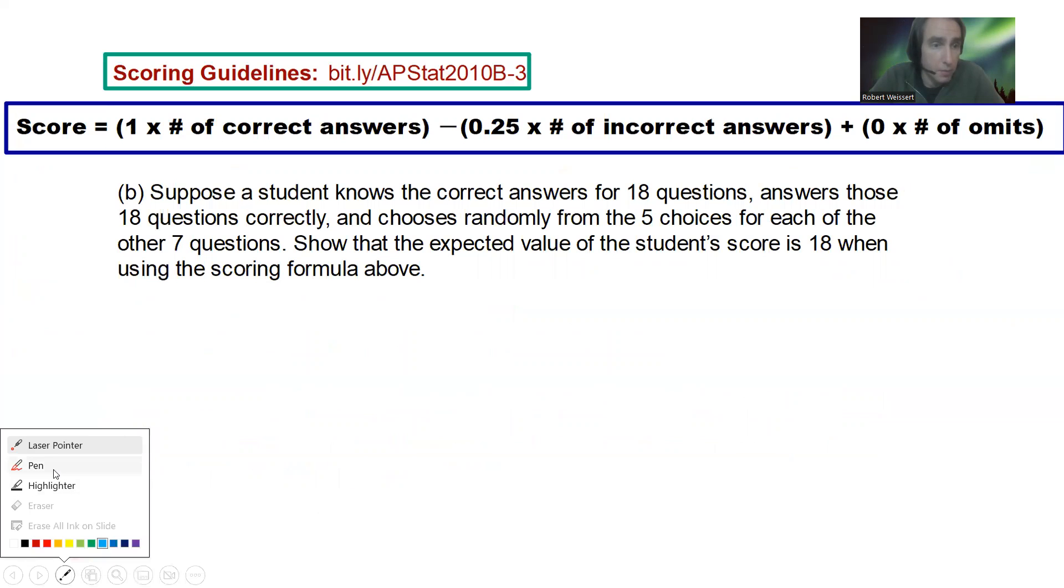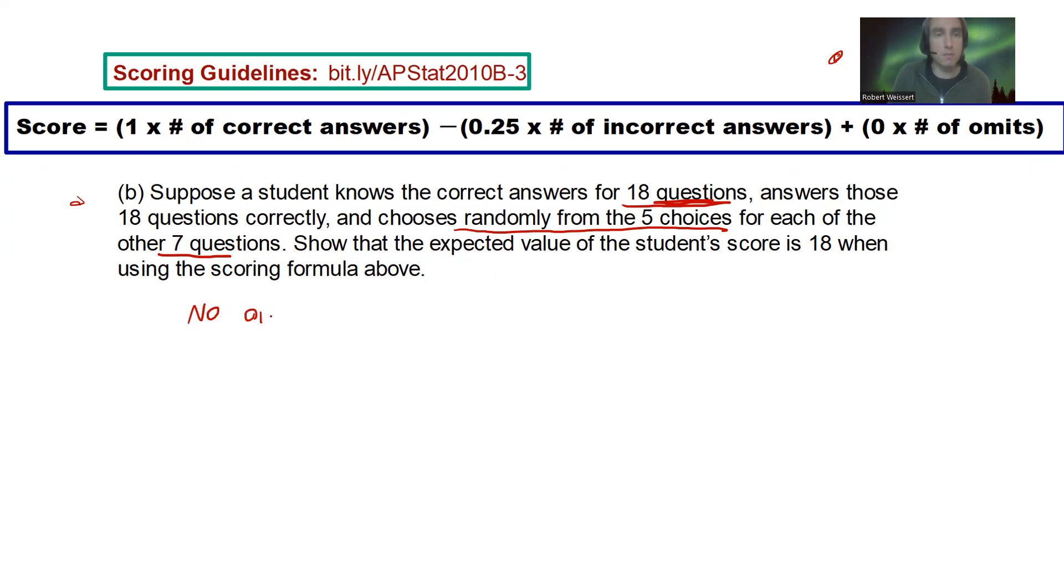Show that the expected value of the student's score is 18 when using the scoring formula above. So, let's just kind of focus on the formula for a minute, and we're going to write a couple things on here, okay? Suppose that a student knows the correct answers for 18 questions, okay? That's given, alright? Student knows those 18 questions, so guess what? They're going to get those 18 points, but is that all the questions they're going to get right? Well, not necessarily, because it says we answer those questions correctly, and then chooses randomly from the five choices for each of the other seven questions. So, no omits, no omits in this question.